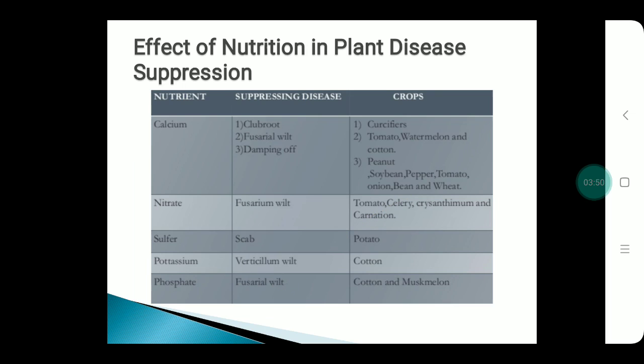From this table, we can clearly see that the nutrient calcium has the ability to suppress diseases like club root, Fusarium wilt, and damping-off in crops such as crucifers, tomato, watermelon, and cotton.